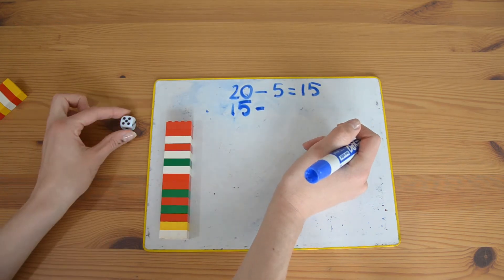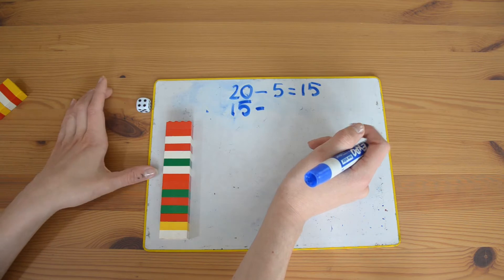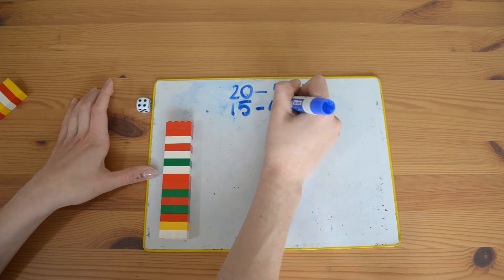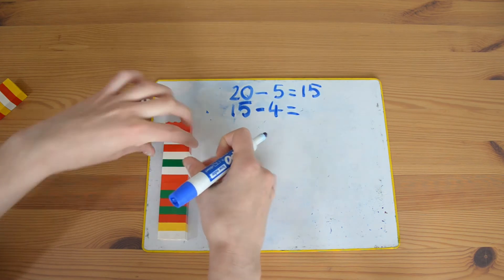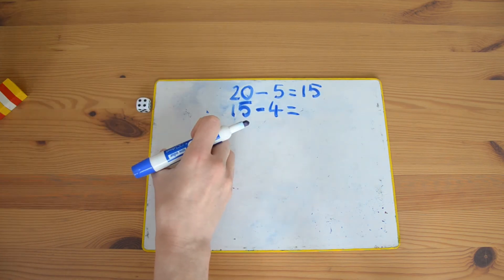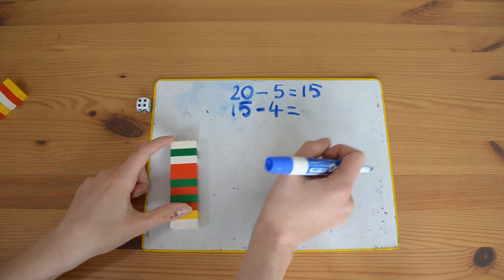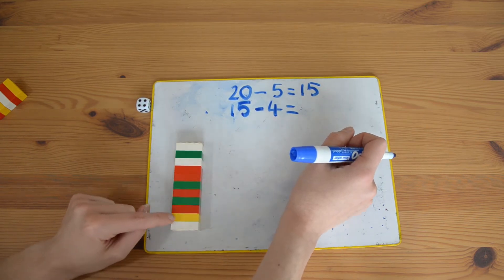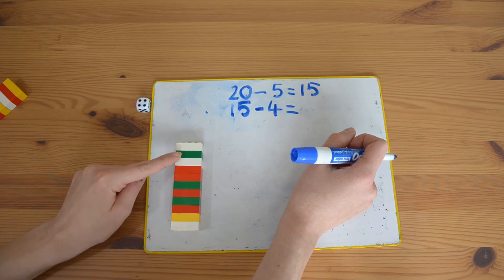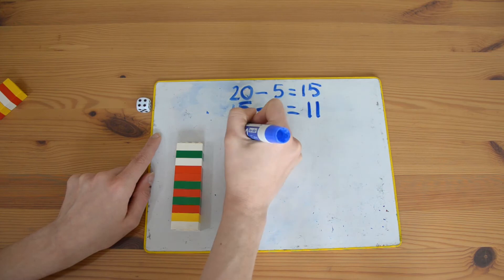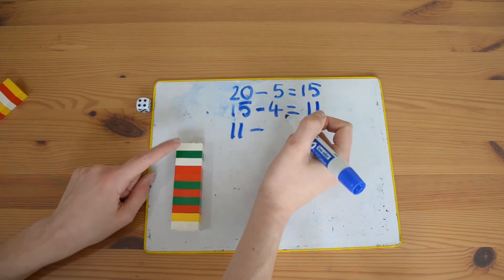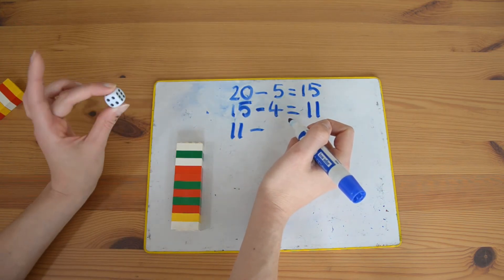So now I have fifteen. The dice is going to tell me how many I'm going to take away this time. Four. So fifteen take away four: one, two, three, four. Now I need to find out how many I've got left. One, two, three, four, five, six, seven, eight, nine, ten, eleven. Oh, I'm getting close.